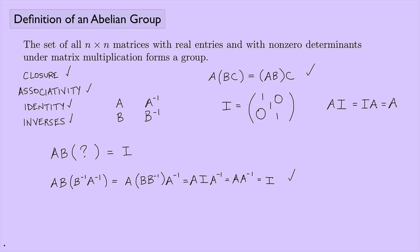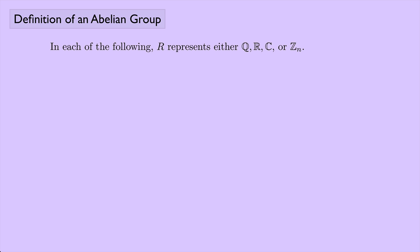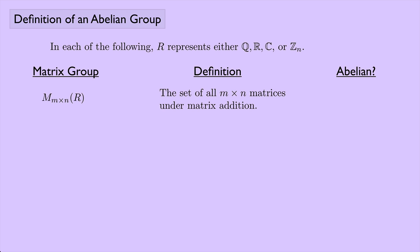Since we're talking about matrix groups, there are a few others with notation you should know. In all the following, R will represent rational numbers, real numbers, complex numbers, or Z_N. The first is M(m×n, R) — the set of all m×n matrices under matrix addition. For addition, we don't need square matrices as long as dimensions match. This is abelian, since matrix addition is commutative.